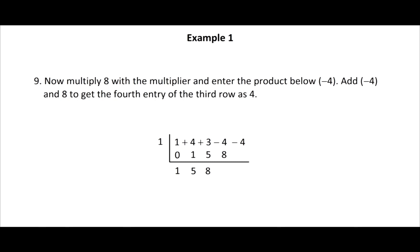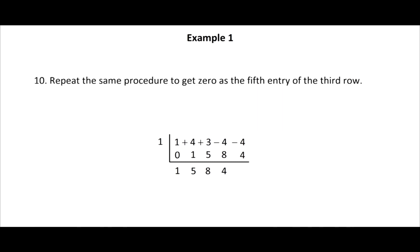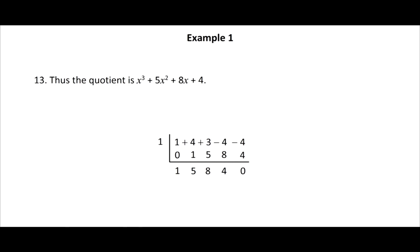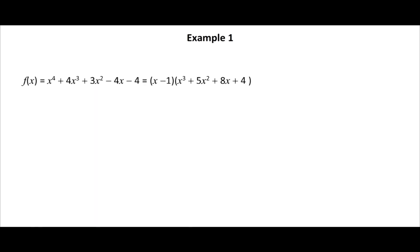Multiply 8 with the multiplier and enter the product below minus 4. Add minus 4 and 8 to get 4 as the fourth entry of the third row. Repeat the same procedure to get zero as the fifth entry of the third row. The last entry stands for the remainder, while the first four figures stand for the coefficients of the quotient in descending powers of x. Thus the quotient is x cubed plus 5x squared plus 8x plus 4 and the remainder is zero.